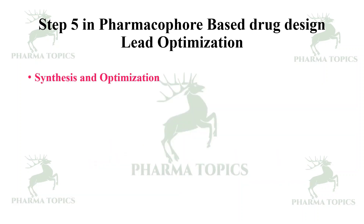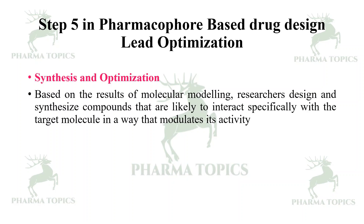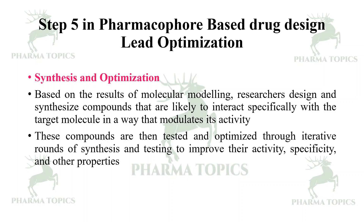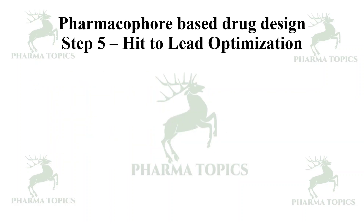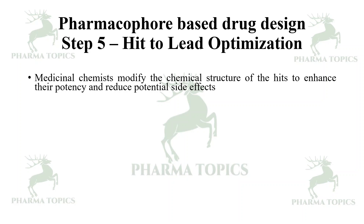Next is lead optimization. You can synthesize the leads and optimize them based on the results of molecular modeling or molecular dynamics. Design and synthesize compounds likely to interact specifically with the target molecule in a way that modulates its activity. These compounds are then tested and optimized through iterative rounds of synthesis and testing to improve their activity, specificity, and other properties. Medicinal chemists modify the chemical structure of hits to enhance potency and reduce potential adverse effects.